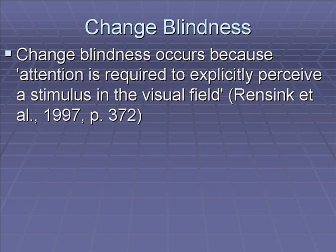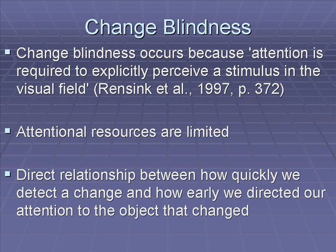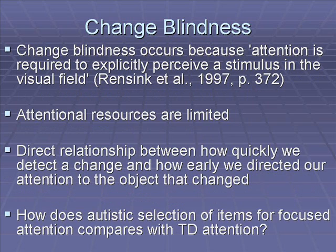According to Renzick and his colleagues, change blindness occurs because attention is required to explicitly perceive a stimulus in the visual field. We can't see everything in pictures because our attentional resources are limited. Renzick also points out that there is a direct relationship between how quickly we detect a change and how early we direct our attention to the object that changed.